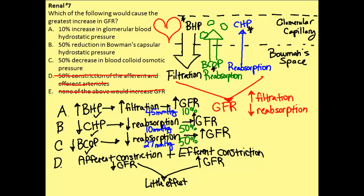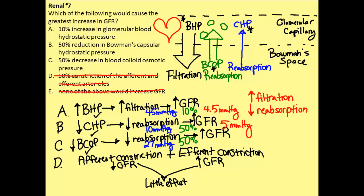Now we have to do very simple math to determine which change is largest, because we want to know the greatest increase in GFR. 10% of 45 would be a 4.5 mmHg pressure change. 50% of 10 would be a 5 mmHg pressure change. And 50% of 27 would be a 13.5 mmHg pressure change. Based on the numbers, once we went into that final step, we determined that response C is our correct answer.